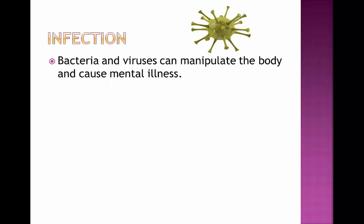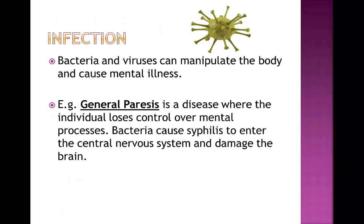Bacteria and viruses can manipulate the body and cause mental illness, which can then lead to abnormal behaviour. For example, general paresis is a disease where the individual begins to lose control over mental processes. It begins by bacteria causing syphilis to enter the central nervous system, which damages the brain. As it damages the brain, you then lose control over your mental processes, which can lead you to become abnormal.